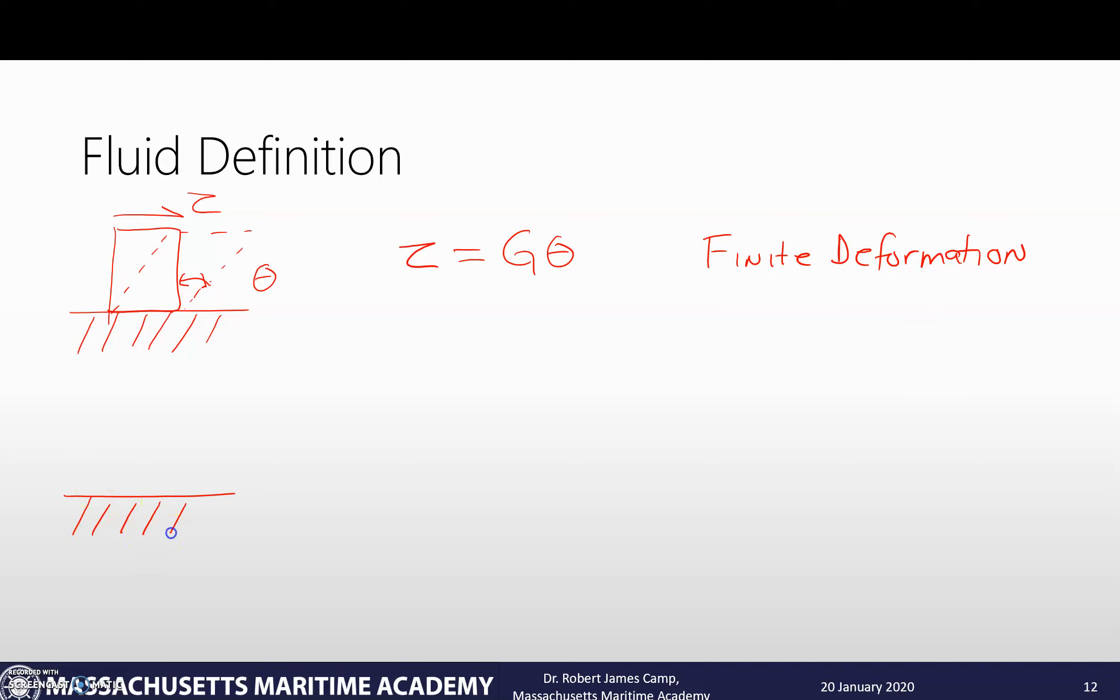Now, as opposed to that, let's look at a chunk of fluid. This is a theoretical chunk of fluid, because obviously we can't drop a glob of fluid there and have it be in a rectangle. But once again, we're going to apply that shear stress to the fluid, and what happens? Well, it starts to deform.